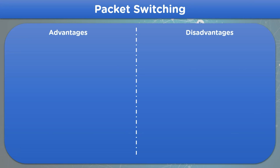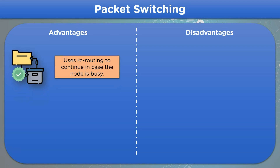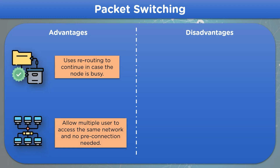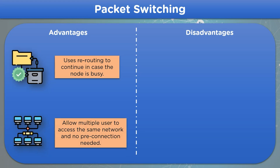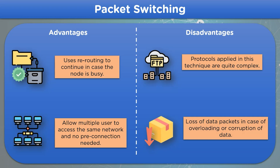Now let's look at some advantages and disadvantages of packet switching. Packet switching provides rerouting in case a network node is busy. It also allows multiple users to access the same network, and no predestined path is needed. The disadvantages include the complex protocols required for the working of network nodes, and the possible loss of data packets during transmission in case of overloading or corruption of data.